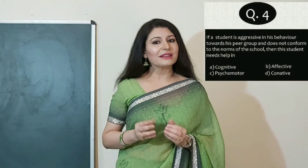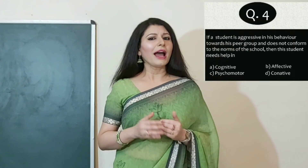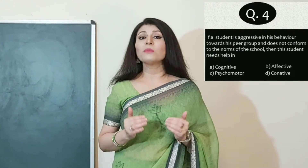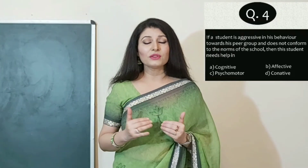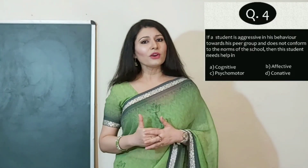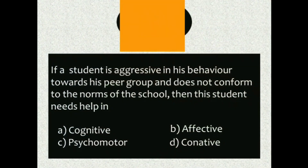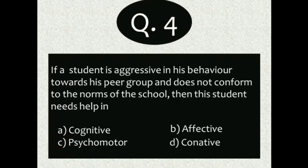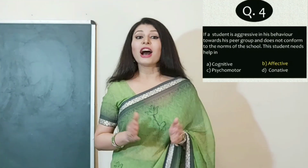The answer is D — attitude. Question 4: If a student is aggressive in behavior toward his peer group and does not conform to the norms of the school, this student needs help in: A) Cognitive domain, B) Affective domain, C) Psychomotor domain, or D) Cognitive domain. The answer is B — affective domain.